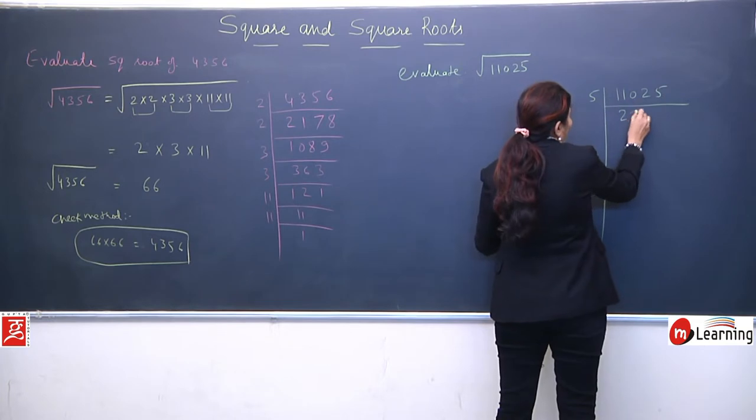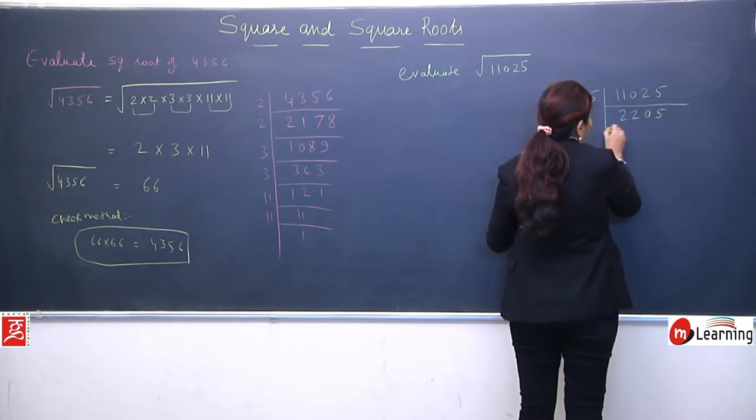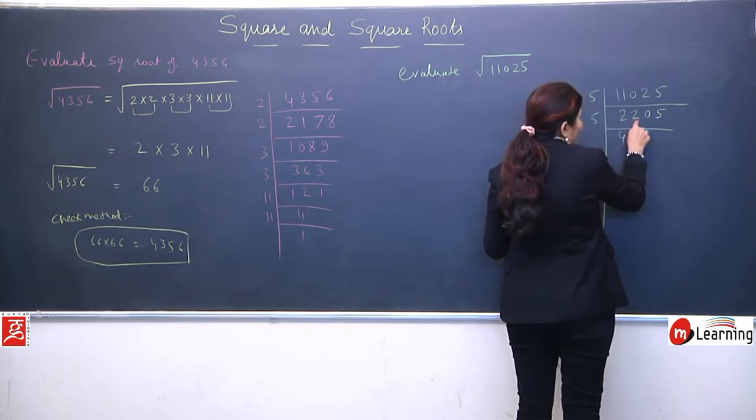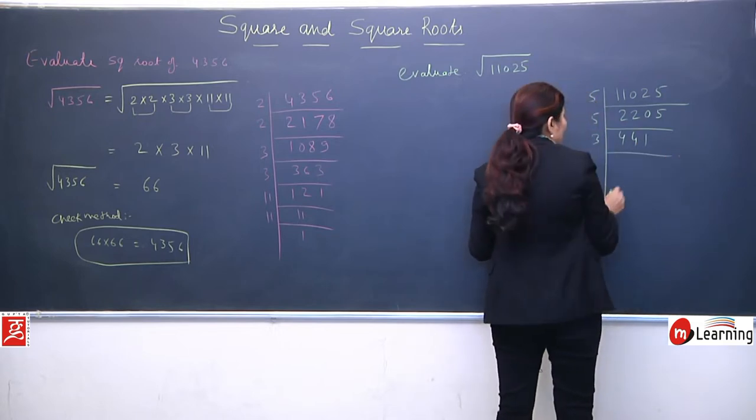The last digit is 5, so we'll divide by 5. 5 twos are 10, 5 twos are 10, 0, 5 fives are 25. Again by 5, 5 fours are 20, 2 will carry over, 5 fours are 20, 5 ones are 5.